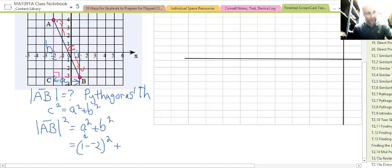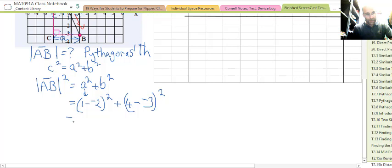b going up there, the top one is 4 minus the bottom one which is -3. So that's 4 - (-3) and we have to square that because it's Pythagoras's theorem. So 1 - (-2) is the same as 1 + 2 because minusing a negative makes adding a positive.